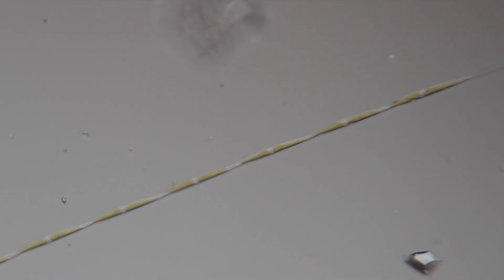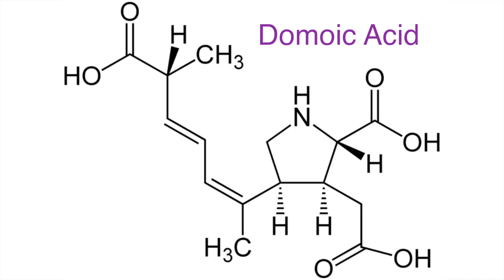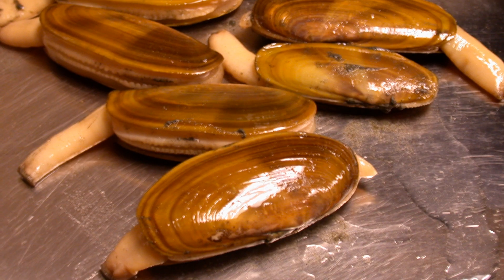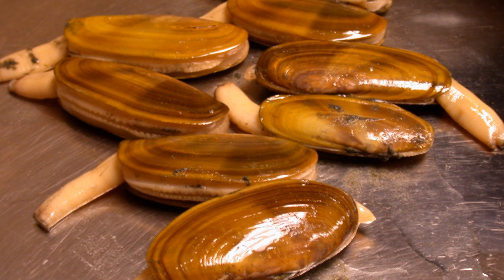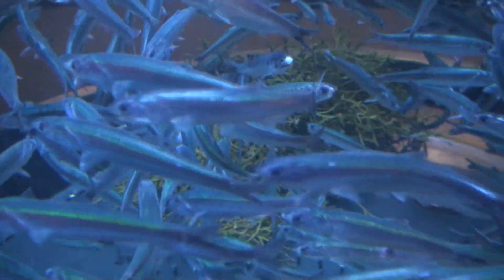Pseudo-nitzschia species are potentially toxic diatoms. Some are capable of producing large quantities of domoic acid, a neurotoxin that bioaccumulates in shellfish and forage fish, such as sardine and anchovy.